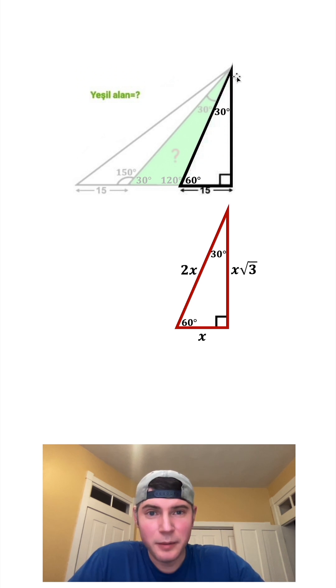Since the side opposite the 30 is 15, that means the side opposite the 60 is going to be 15 root 3. And the hypotenuse opposite the 90 is going to be 30.